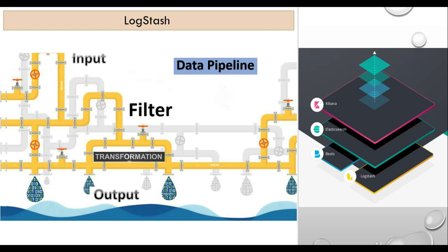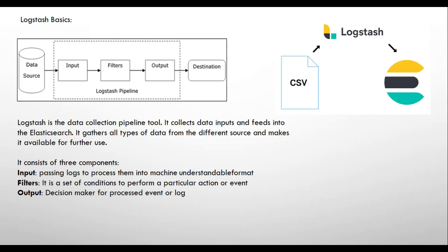The Logstash basics: the data source can be any form — like CSV, Excel, or SQL — and that acts as input. Then there is a filter and output. The destination can be anything like Elasticsearch, Kafka, or any destination you want. This way we can convert data from one format into another.